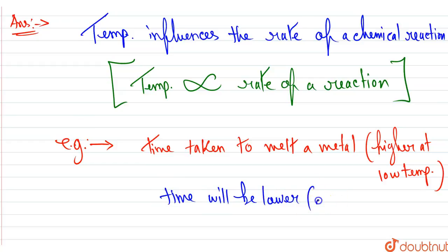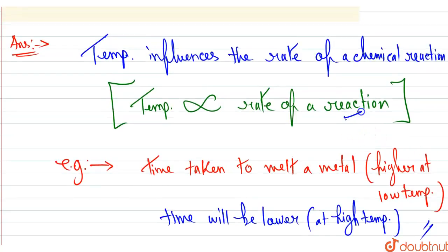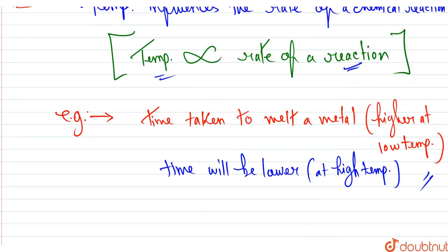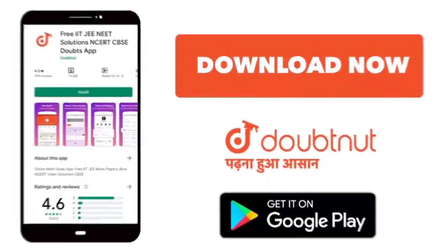At higher temperature conditions, we can clearly say that the rate of a reaction is directly proportional to temperature. For class 6 to 12, IIT-JEE and NEET level, trusted by more than 5 crore students, download Doubtnet app today.